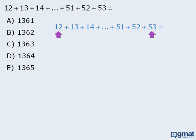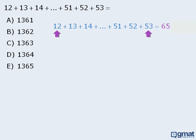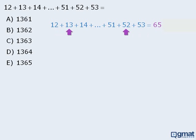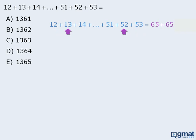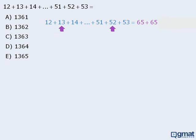For example, we'll add these two numbers to get 65, then we'll add these two numbers to get 65, and we'll add these two numbers to get 65 as well. In fact, we can see that the correct answer here will be the sum of several 65s, and perhaps one different number if there isn't an even number of numbers in our sum.